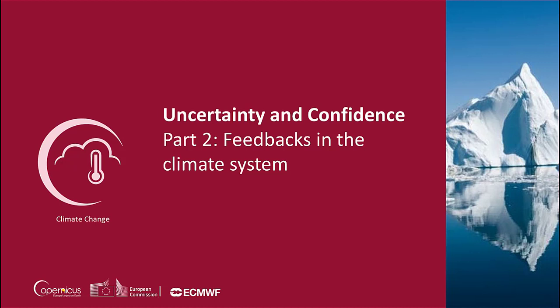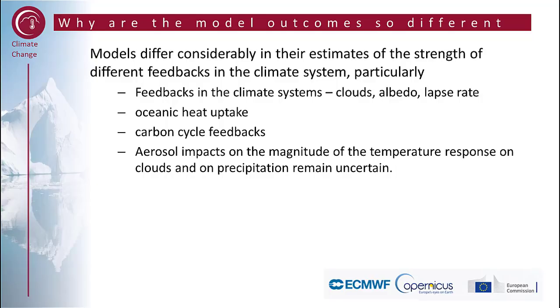This is part two of the uncertainty and confidence lesson. In this part we discuss the main feedbacks in the climate system. One of the main questions we ask ourselves when discussing uncertainty in future climate change projections is: why are the model outcomes so different? One of the main reasons is that models differ considerably in the estimates of the strengths of the different feedbacks.